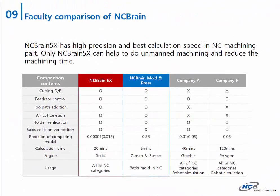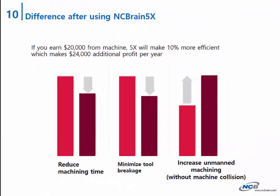Compared with other products, only NCBrain contains essential functions for unmanned machining and less machining time. Operation time is way faster than the others, and it can even be applied during preparation for NC milling. You will get a lot of profits and advantages by less machining time, less tool breakage and abrasion, and a higher unmanned run rate.